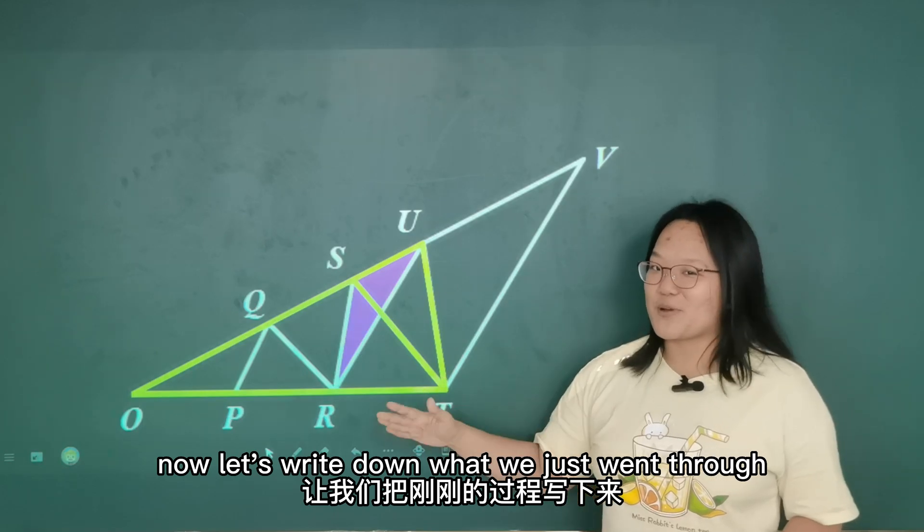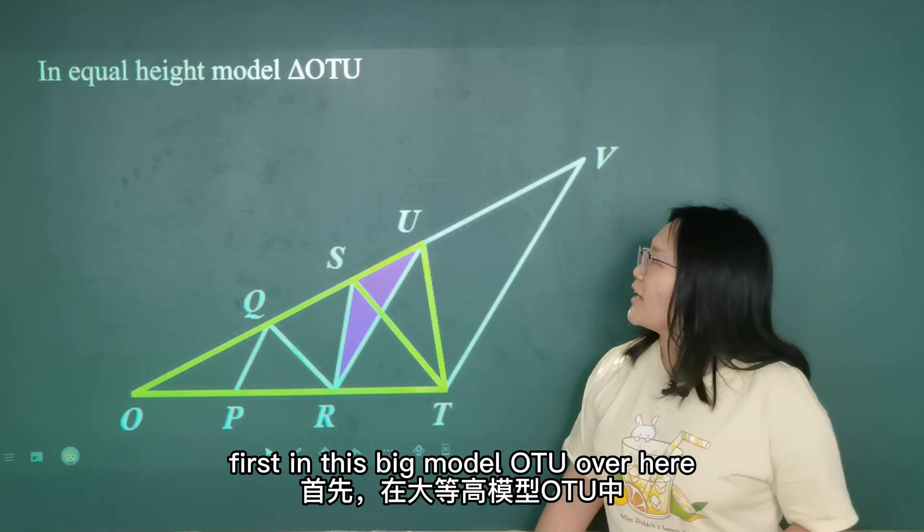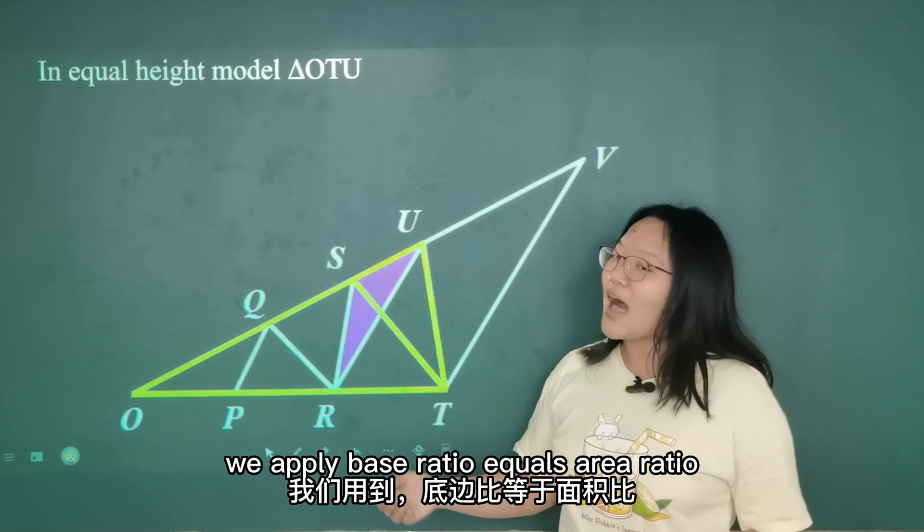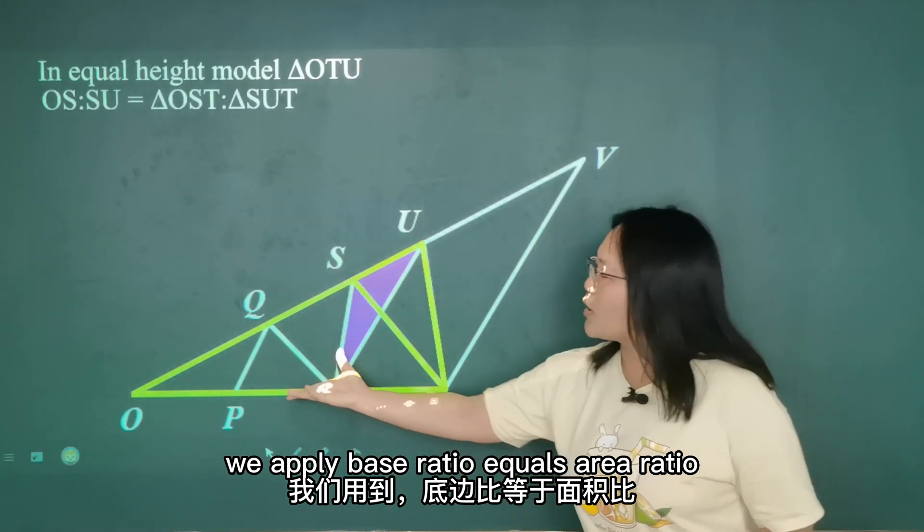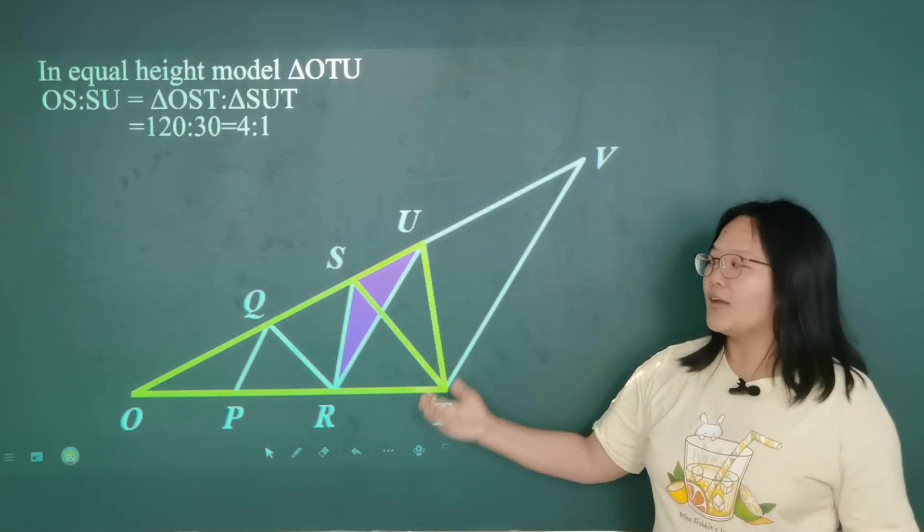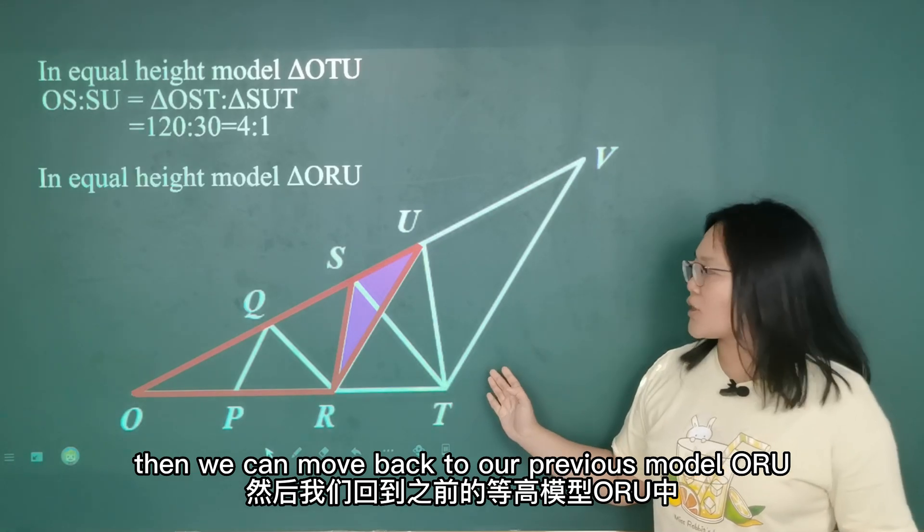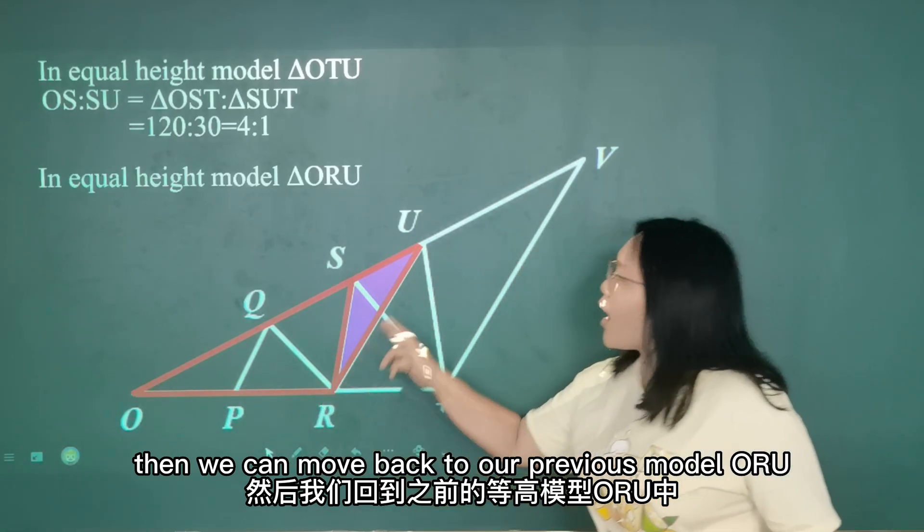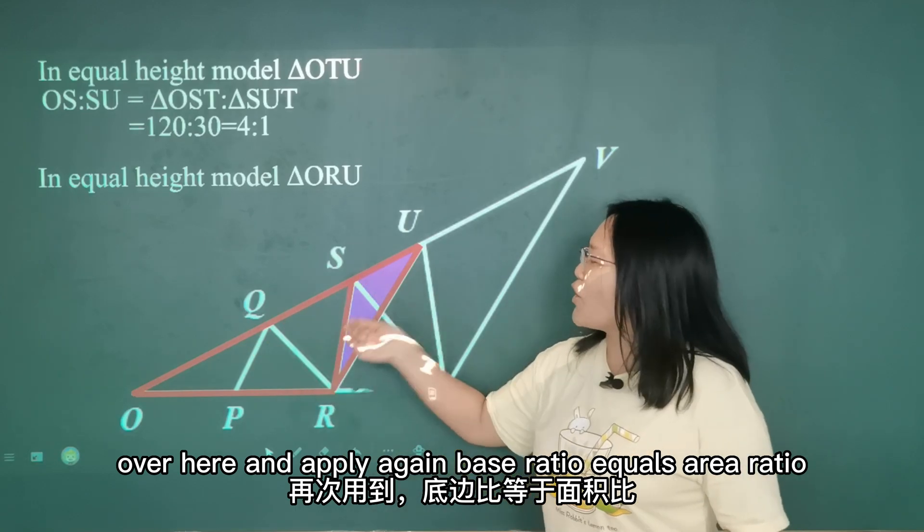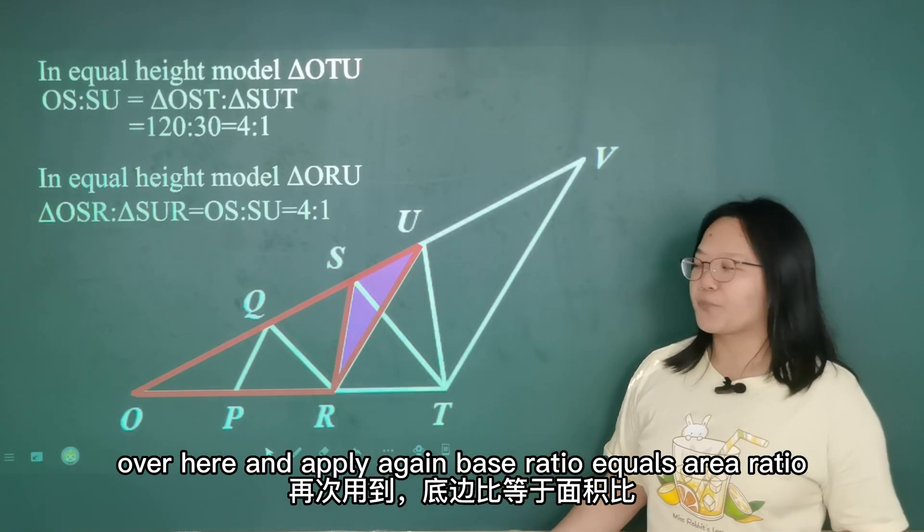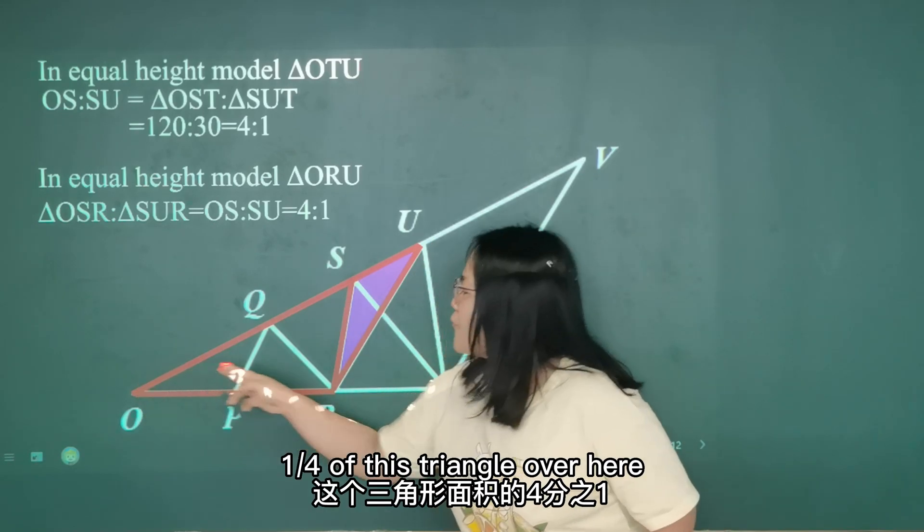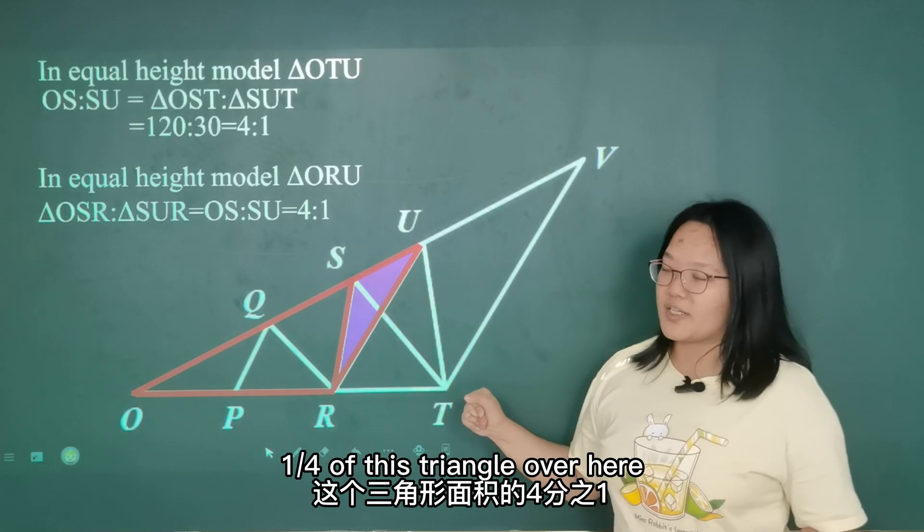Now let's write down what we just went through. First, in this big model OTU over here, we apply base ratio equals area ratio, which is found to be 4 to 1. Then we can move back to our previous model ORU over here and apply again base ratio equals area ratio. This time, the area we're trying to find is simply one-fourth of this triangle over here.